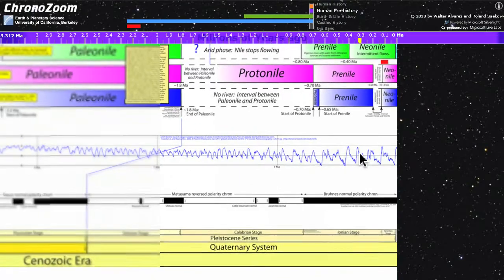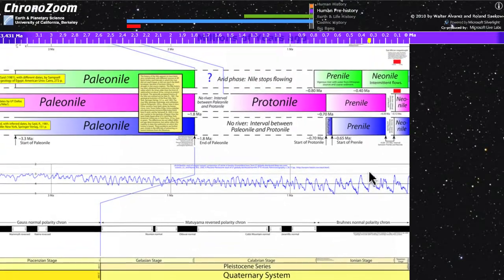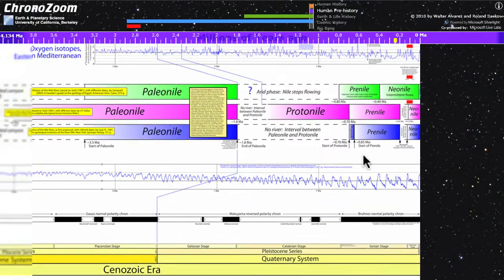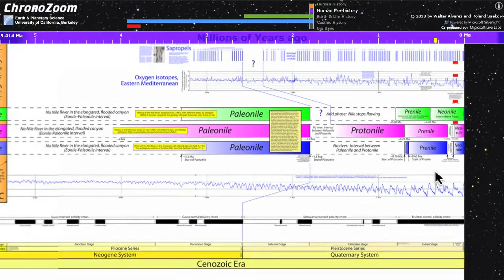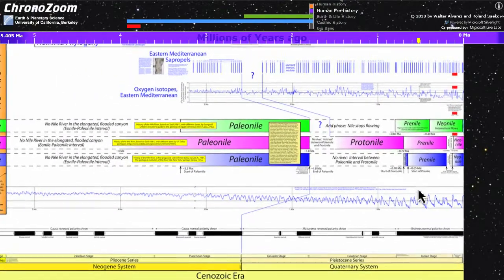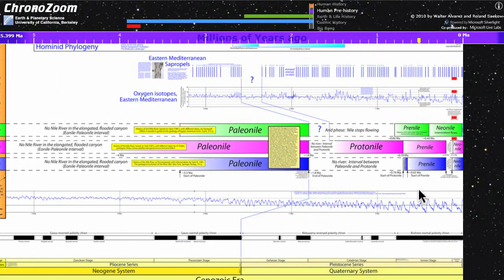If you zoom out a little bit further now, we've shown at the top in these colored bars the history of the River Nile. This is an exciting thing because mostly we don't think about rivers having histories. We think a river just is. But to a geologist thinking about times in millions of years, rivers change.